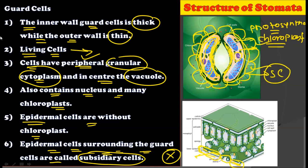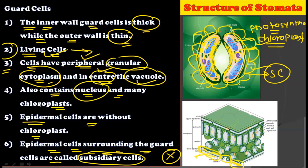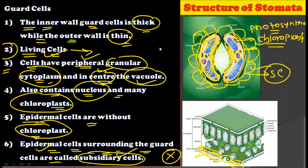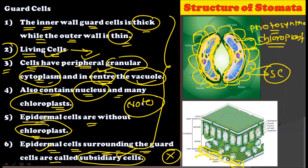So, here we have seen six points about the guard cells: first, the inner wall of the guard cell is thicker while the outer wall is thinner; secondly, guard cells are living cells; third, they have peripheral granular cytoplasm; fourth, in the center they have the vacuole; fifth, they contain the nucleus and many chloroplasts; and sixth, the epidermal cells surrounding the guard cells are without chloroplasts and are also called subsidiary cells. These points are written on this slide so you can take notes directly while watching the lecture.